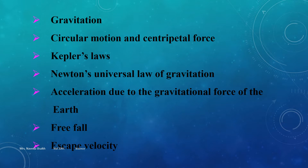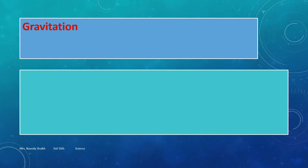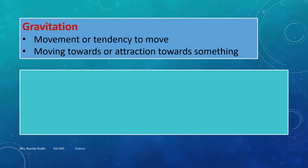The very first thing we learn is the meaning of the word gravitation. Gravitation means movement or tendency to move towards something. Moving towards or attraction towards something is called gravitation. Anything that attracts itself towards another object does so because of a force.